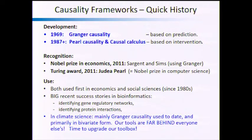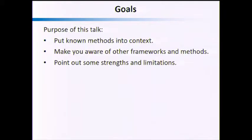The purpose of this talk is to put known methods in context — if you already use Granger causality, how does it relate to Pearl causality? I also want to make you aware of other frameworks and methods you can use, and to point out some strengths and limitations, because all of these methods have their limitations. None of them are miracle solutions.